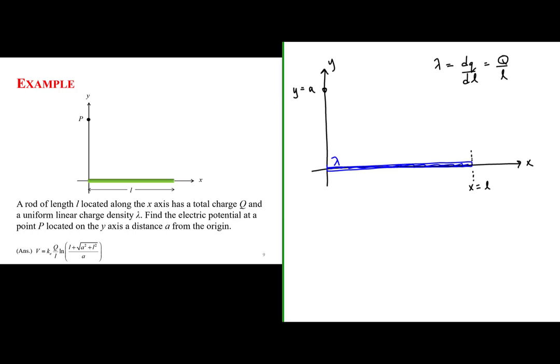Our goal is to find the electric potential at point A due to this line of charge. This line of charge is not a point charge. We know the electric potential due to a point charge Q is KQ over R, where R is the distance from the point charge to the point at which we're evaluating. However, this is a line of charge — charge that has a length.